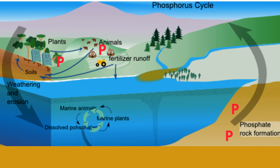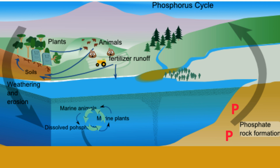Plants and animals in the ocean absorb the phosphorus, die and decompose, and some of the phosphorus ends up as sediments in the rock.